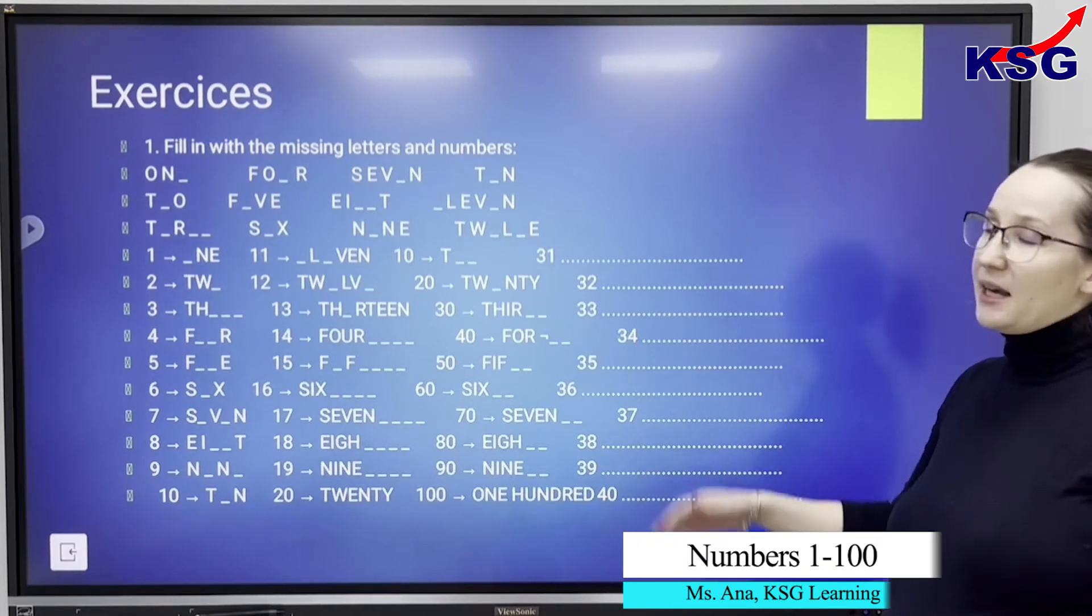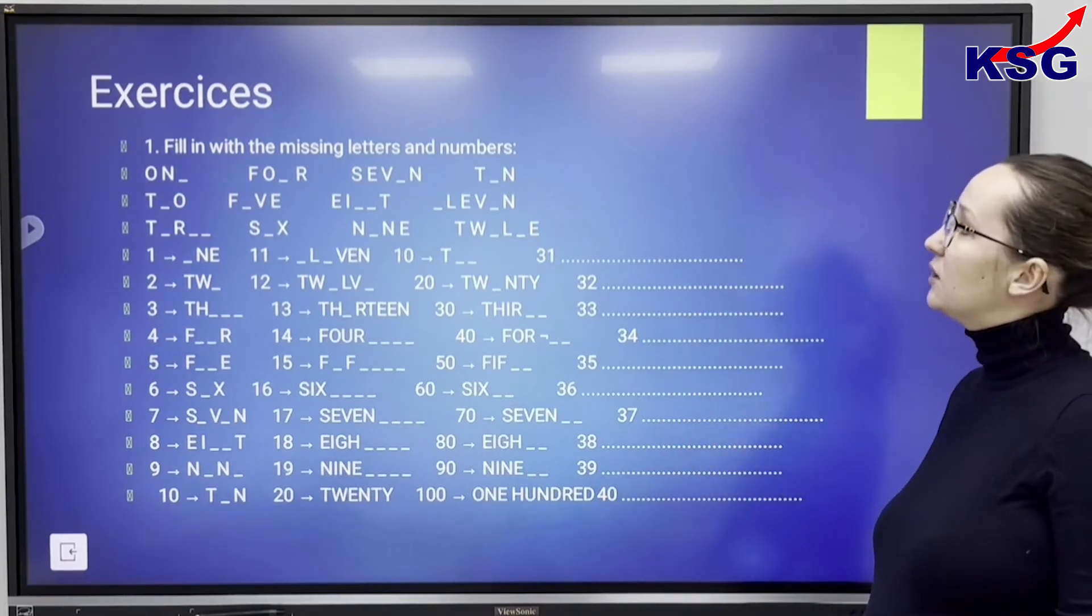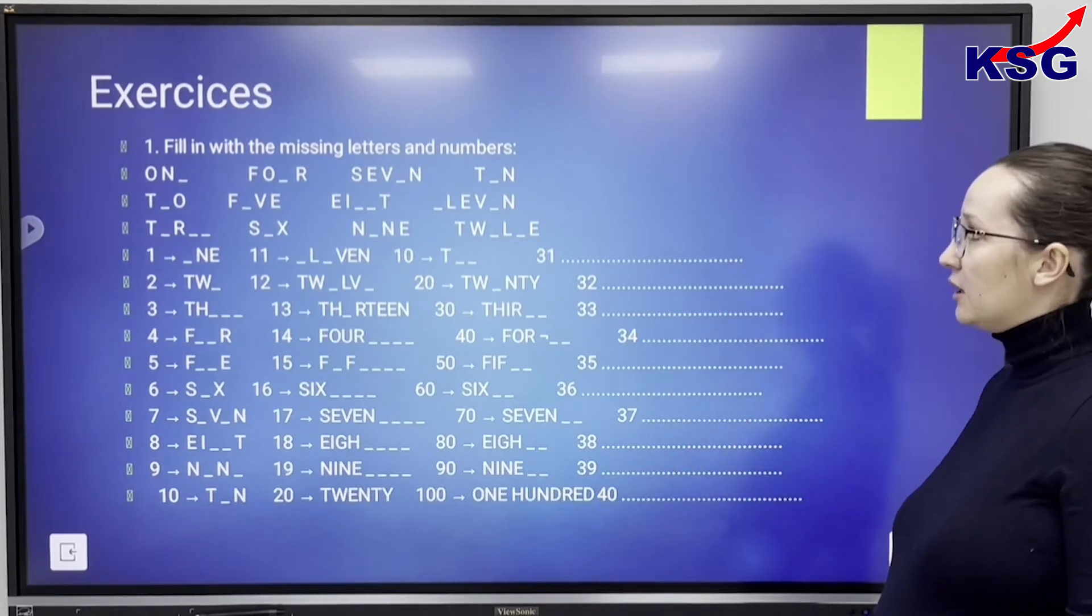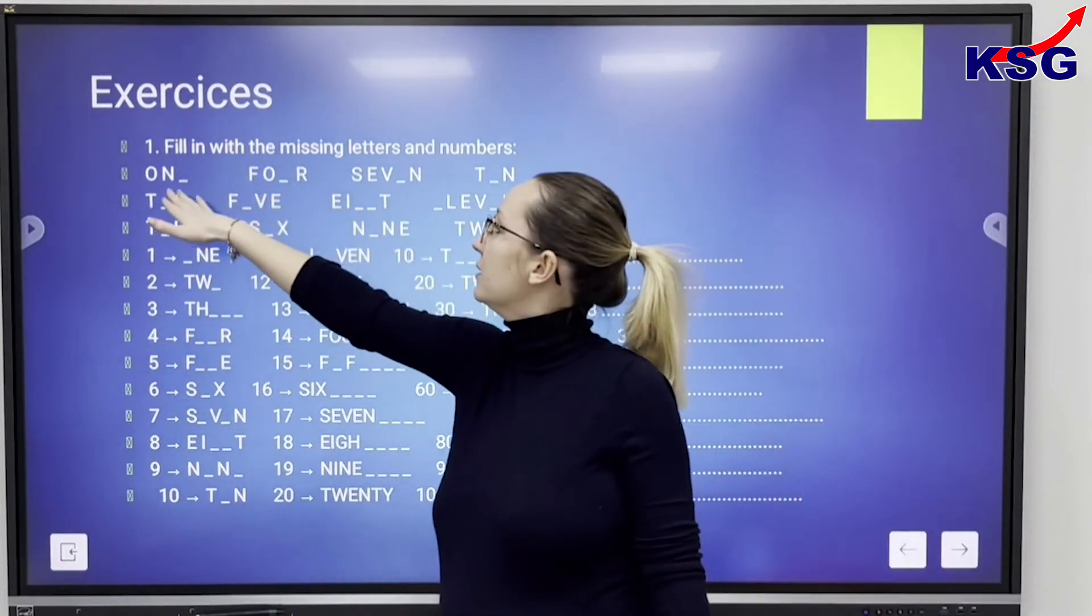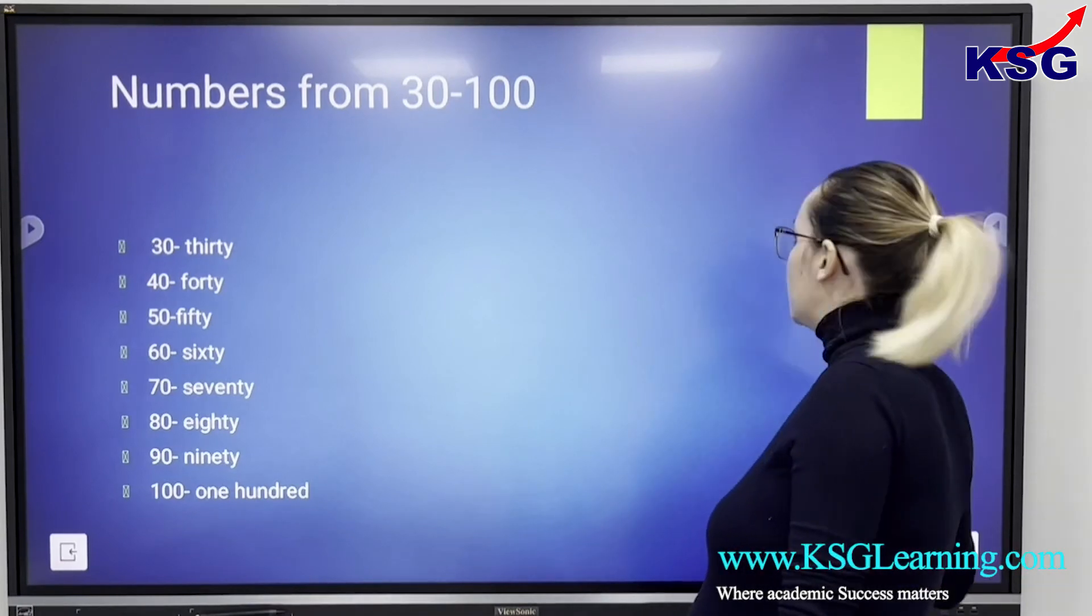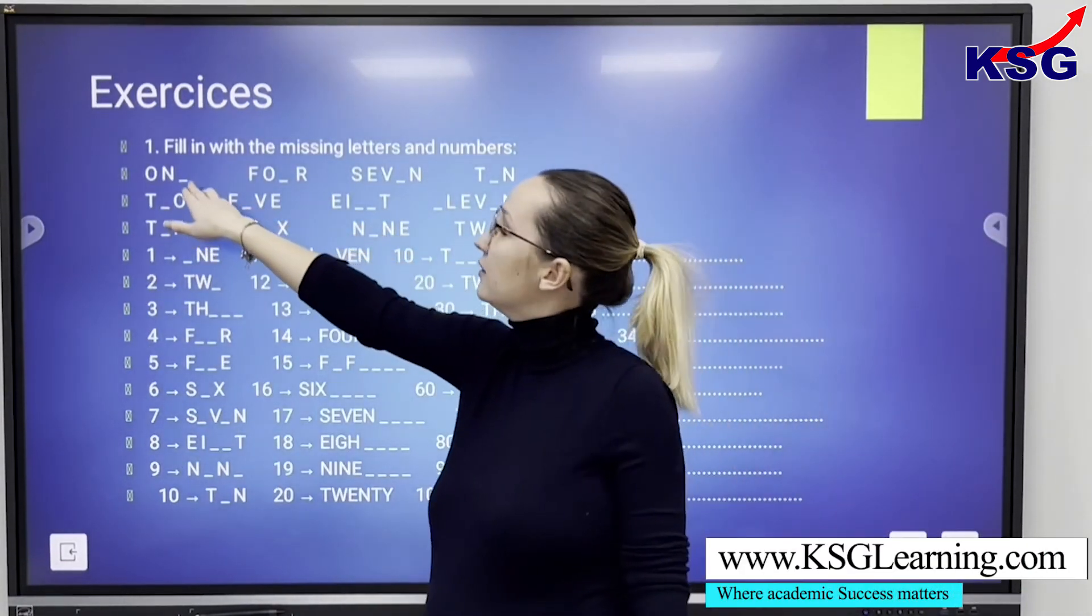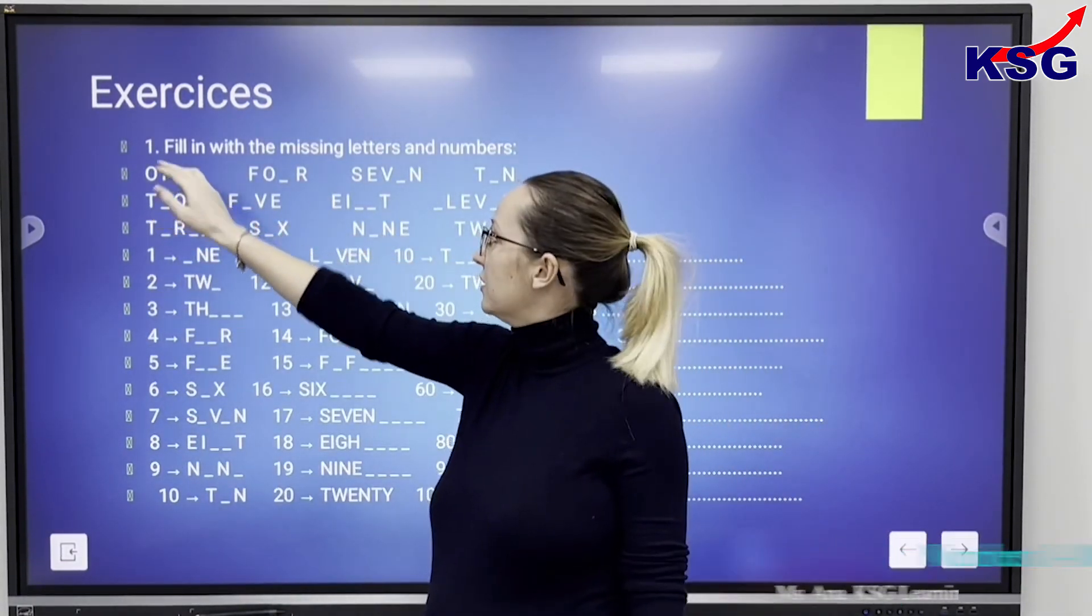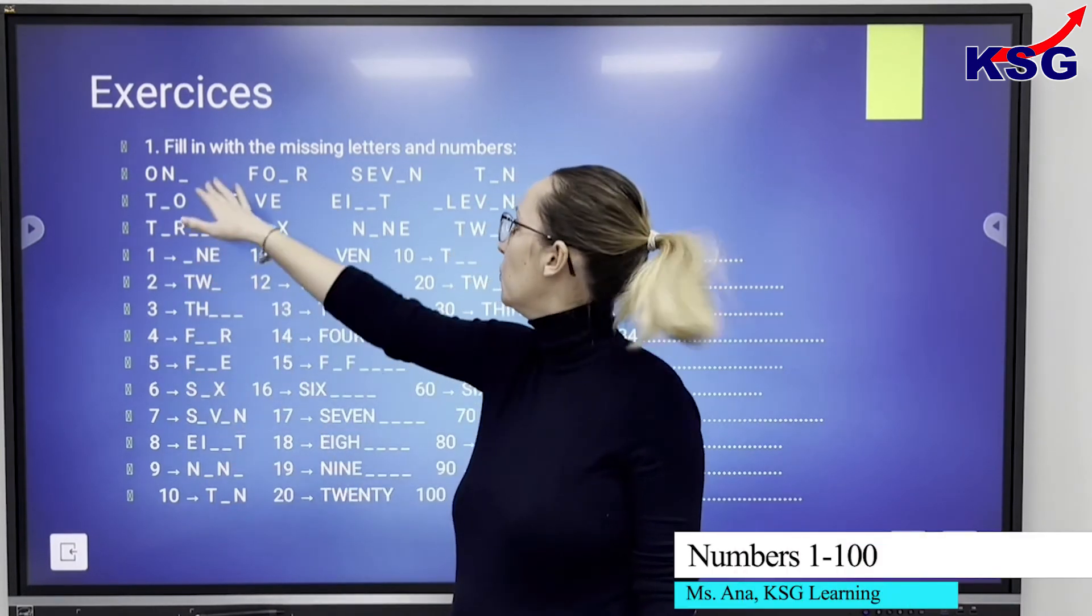You have to do some exercises. Fill in with the missing letters and numbers. You have the first one, one. One letter is missing. Can you guess what letter is missing here? E. Well done. One.